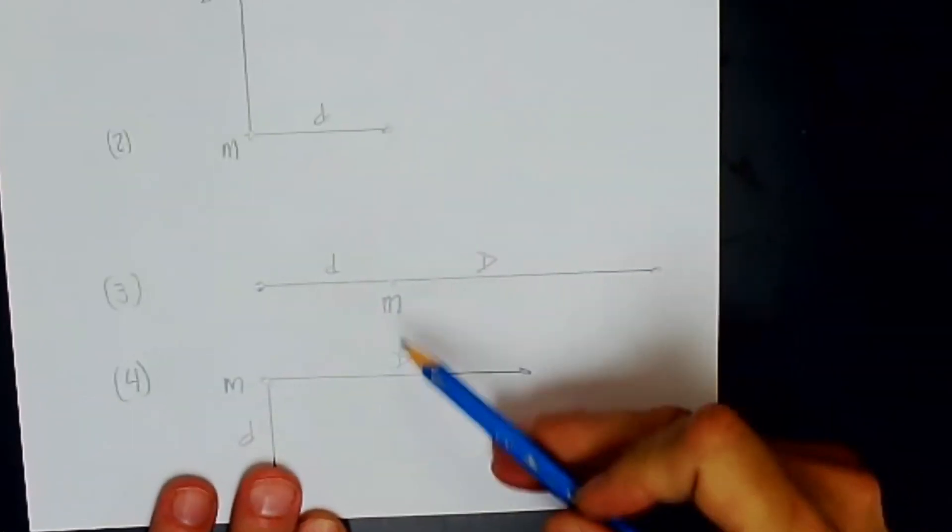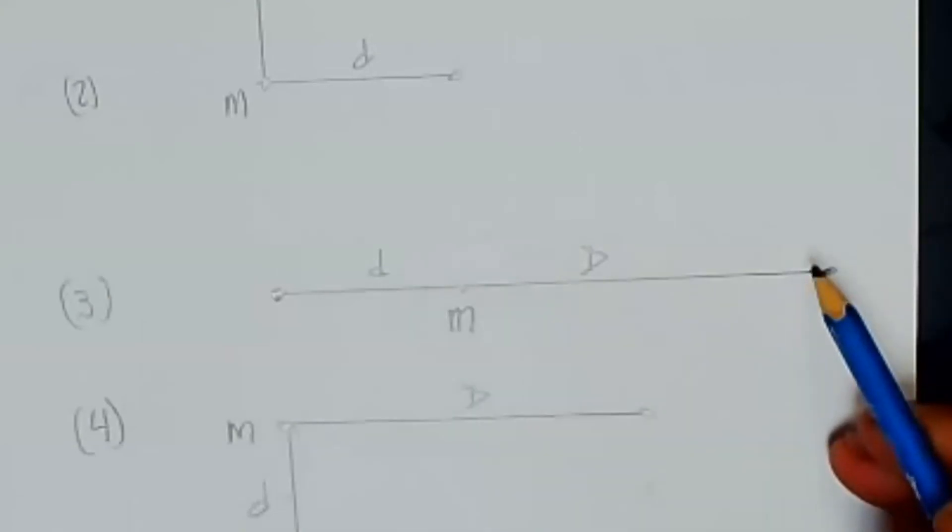Number three, now m is in the middle, little d is over here, and big D is over there.